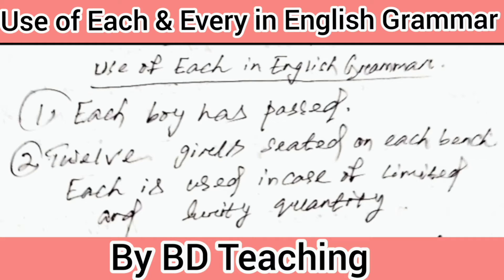First, the use of 'each'. For example: number 1, 'Each boy has passed.' Number 2, '12 girls seated on each bench.' Here, 'each' is used in the case of a limited and specific quantity. So we can use 'each' there.